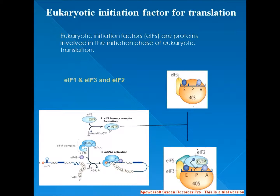The 48S complex then joins to the 60S ribosomal subunit to create the 80S ribosome. There exist many more eukaryotic initiation factors than prokaryotic initiation factors due to the greater biological complexity of eukaryotic cells. The protein RL1 is known to have an essential, probably catalytic, role in the formation of initiation complexes. EIF1, EIF1A, and EIF3 all bind to the ribosomal subunit-mRNA complex and have been implicated in preventing the large ribosomal subunit from binding the small subunit before it is ready.